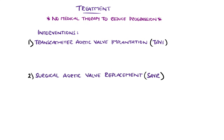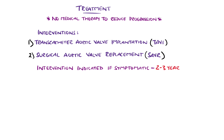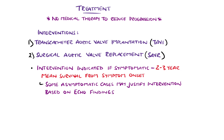The risk of interventions generally outweighs the benefits in asymptomatic patients, but intervention is indicated when symptoms are present, as the mean survival from symptom onset is two to three years. Asymptomatic cases may be candidates for intervention if radiological findings are severe enough, which is why patients undergo echocardiographic monitoring so that the need for intervention is identified early.